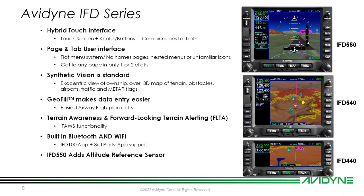Synthetic vision is standard — it's free and included in all of our IFDs. That's the exocentric up-and-back view you're seeing on the IFD 540 and 440 screens. It's an exocentric view of your own ship — you can see the plane icon over a 3D map of terrain, obstacles, airports, traffic, and METAR flags. All of that information is displayed on your synthetic vision screen, and it's free and included with the IFDs.